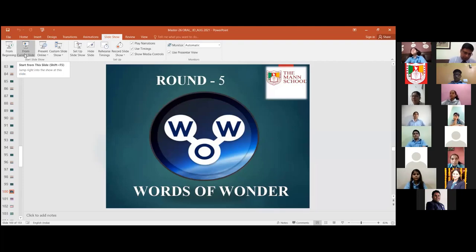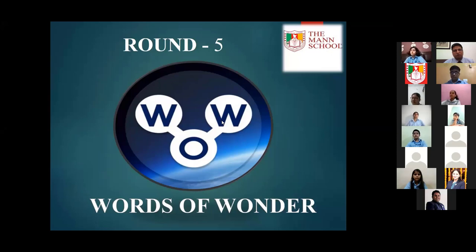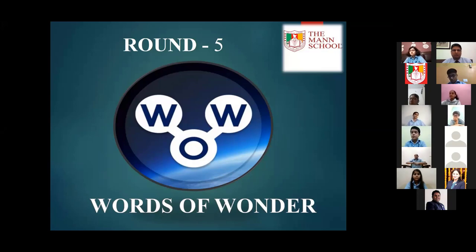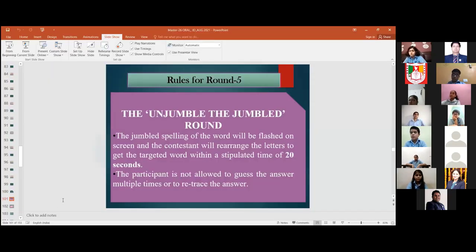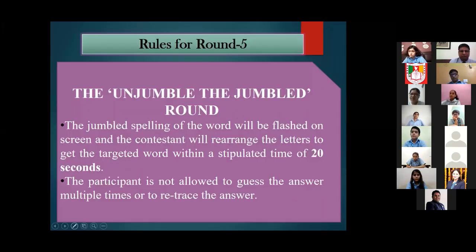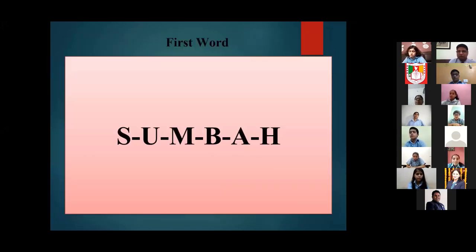Now let's move on to round five — Words of Wonder — where we unjumble jumbled words. The jumbled spelling will be flashed on screen and the contestant will rearrange the letters to get the targeted word within a stipulated time.